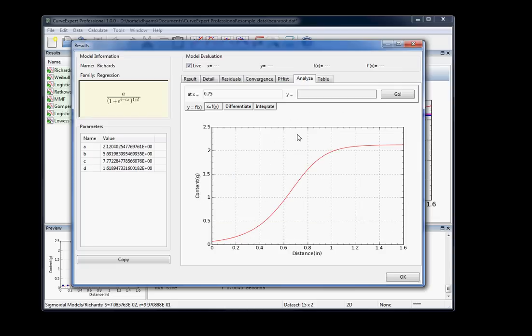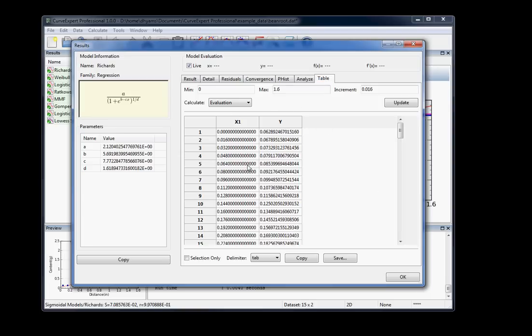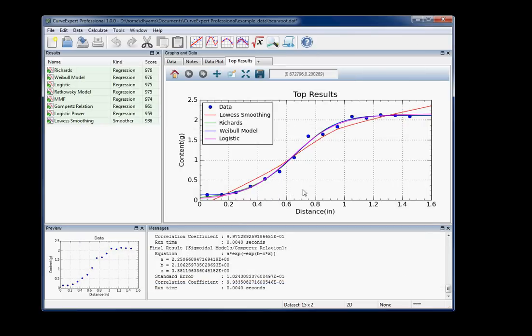And an Analyze dialog where you can do things like evaluate the function forwards and backwards, differentiate and integrate that function, and that's pretty much it for that. There's also a table generator. You can set limits on a table and generate a set of data that's associated with that result at whatever resolution that you require. So that's the result window.